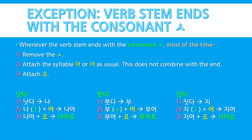And last but not least, whenever the verb stem ends with the consonant ㅅ, most of the time you'll remove the ㅅ, then you'll attach the syllable 아 or 어 as usual — this does not combine with the end — and then you'll attach 요. So 낫다 becomes 나아요. 붓다 becomes 부어요. And 짓다 becomes 지어요.